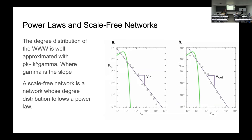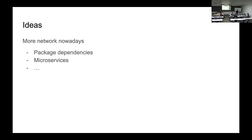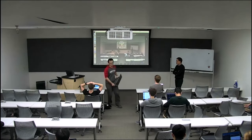From a software engineering research perspective, there are more and more networks showing up — for example, dense package dependency networks in open source communities. There are also microservices — Twitter is trying to remove internal microservice dependencies, and we'll see how that goes.